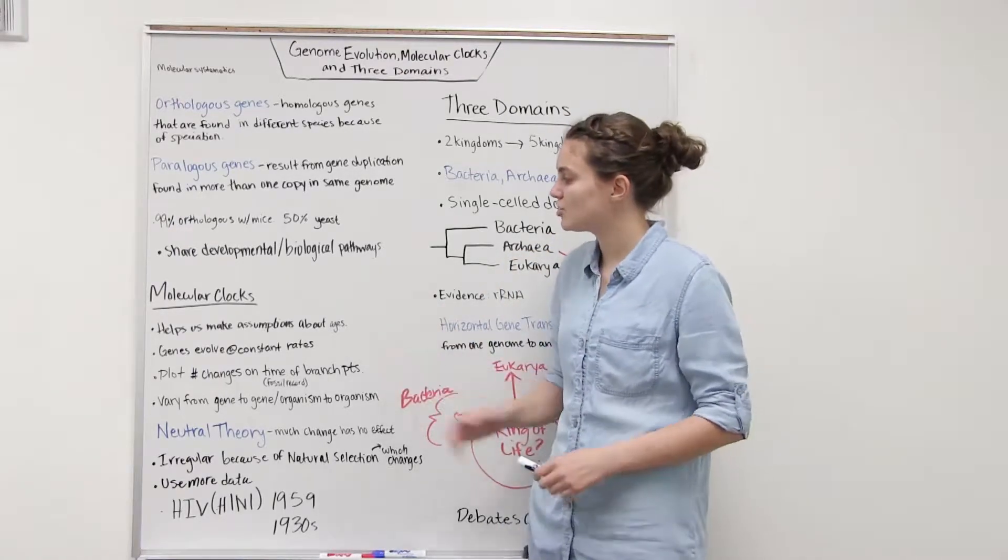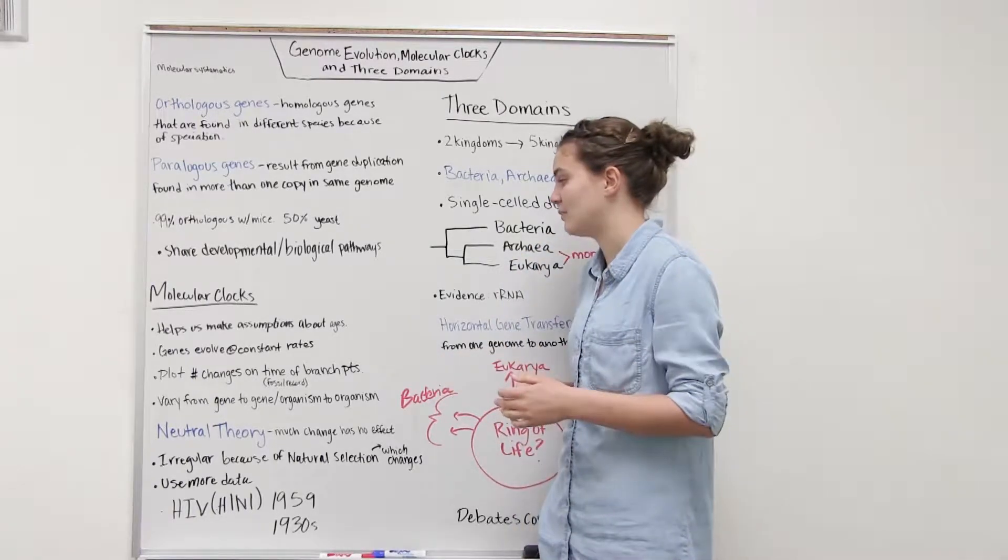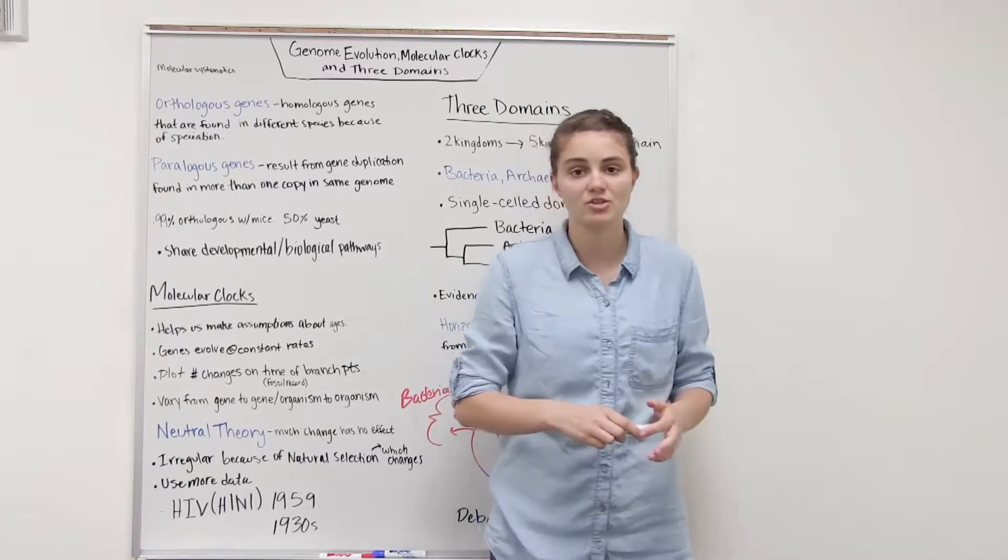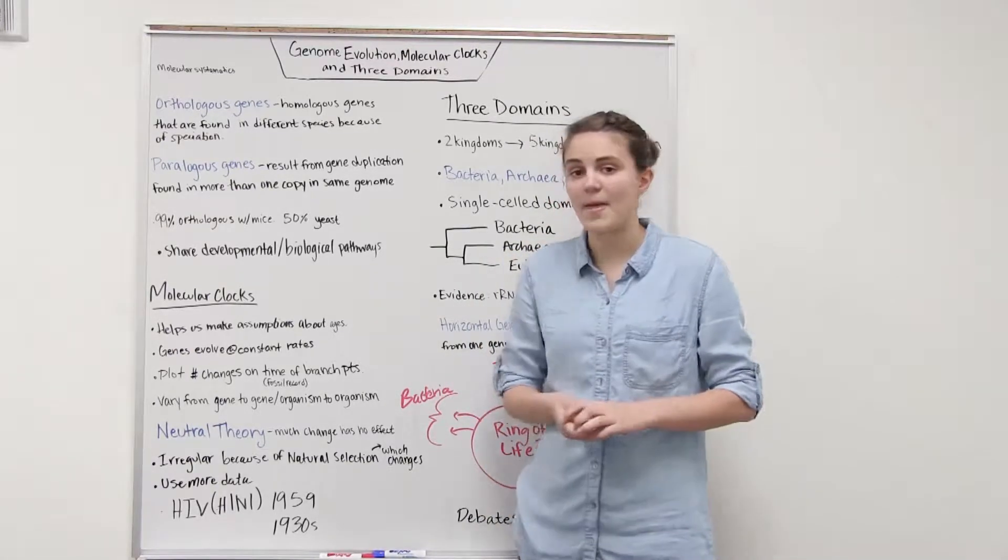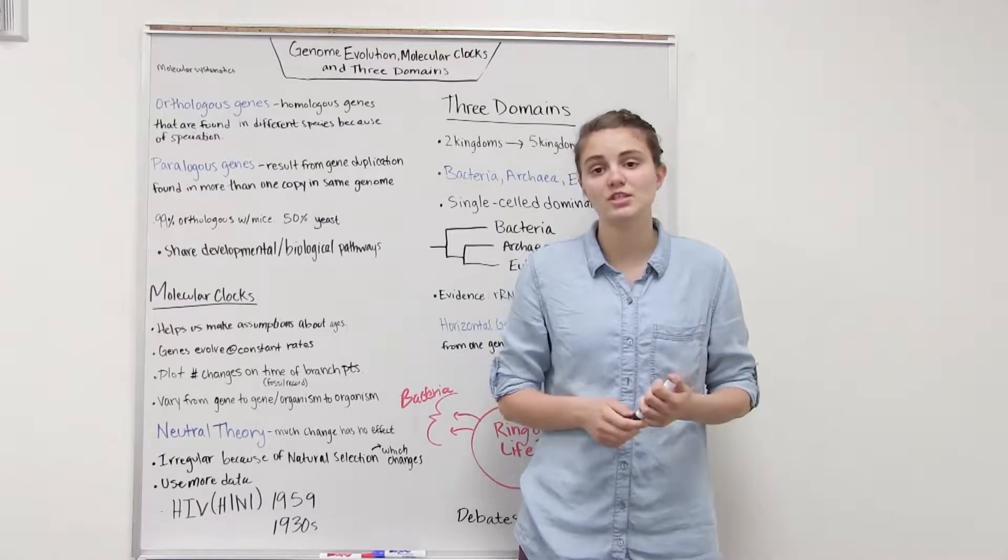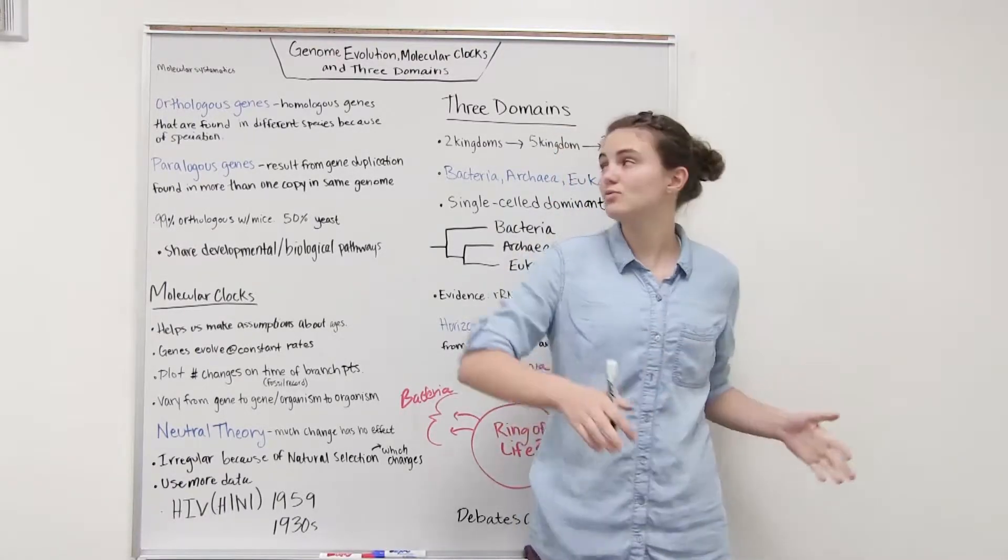Moving on to molecular clocks. Molecular clocks are just ways that we are able to make assumptions about when certain evolutionary events occurred, and they're based off the assumption that some genes evolve at constant rates.